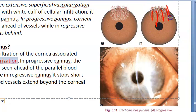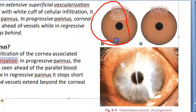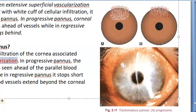In regressive pannus, the vascularization has continued beyond the infiltration. You see progressive pannus in the active stage of trachoma, and regressive pannus in the cicatricial stage of trachoma.